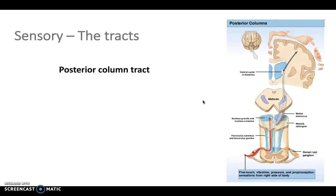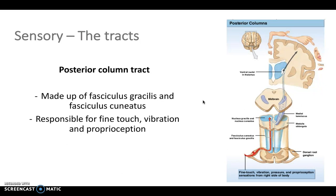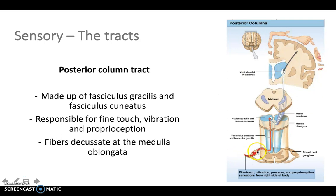The posterior column tract is made up of fasciculus gracilis and fasciculus cuneatus, depending on the level that the impulse comes into the spinal cord. It's responsible for fine touch, vibration, and proprioception, and the fibers decussate at the medulla oblongata. They come in at the spinal level, arise through the spinal cord, and decussate at the medulla oblongata.